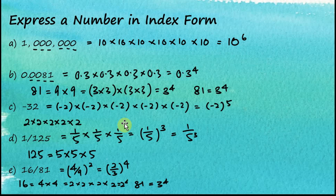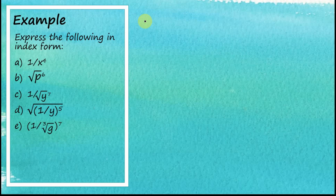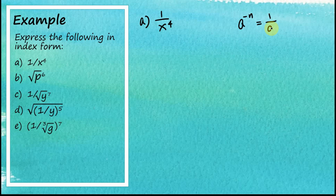Now let's look at another example set. Example A: 1 over x to the power of 4. Recalling that a to the power of negative n equals 1 over a to the power of n, we can write 1 over x to the power of 4 as x to the power of negative 4.